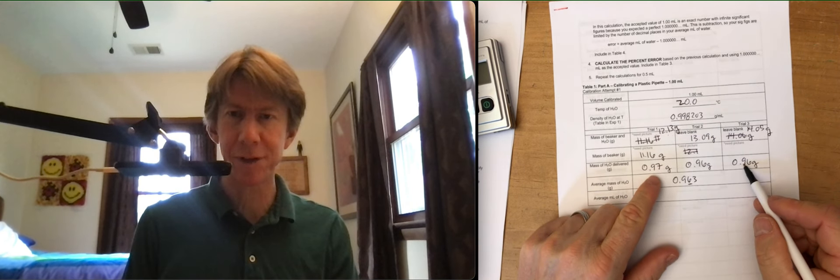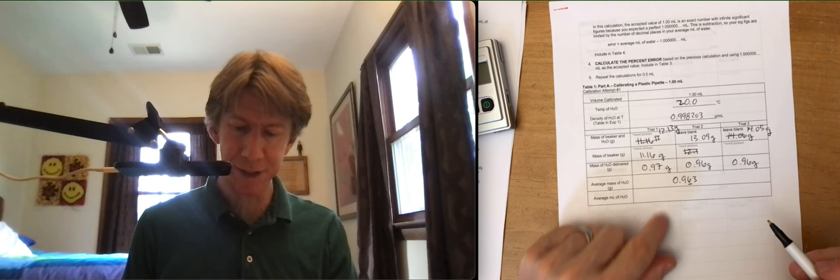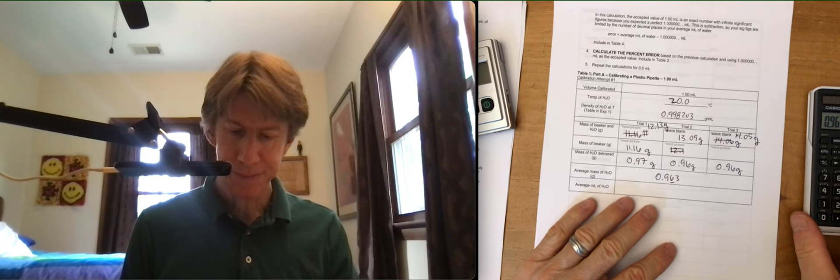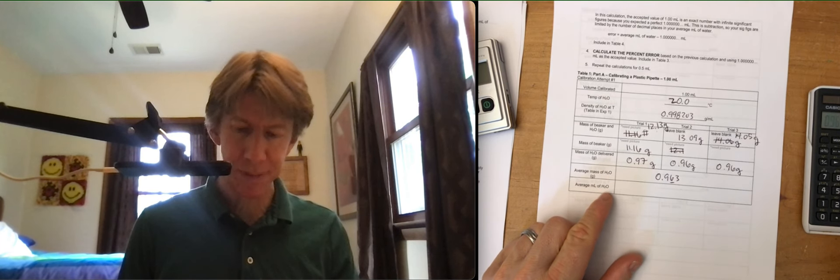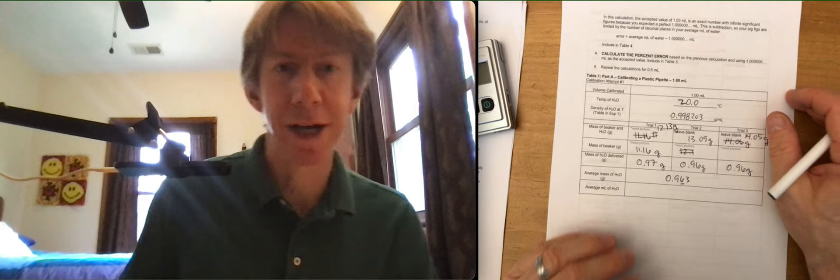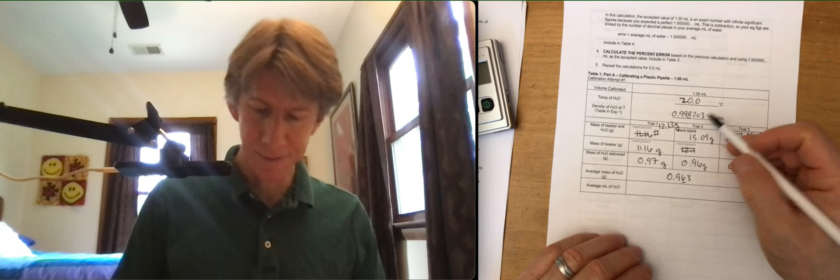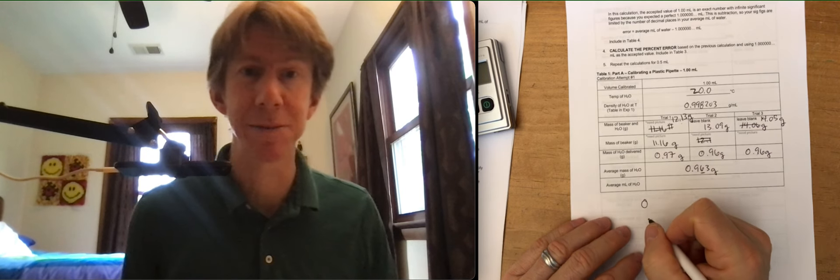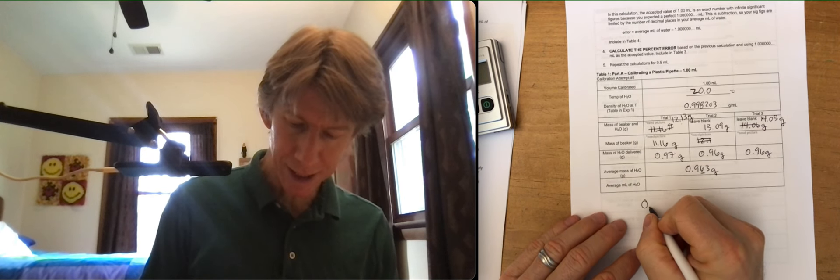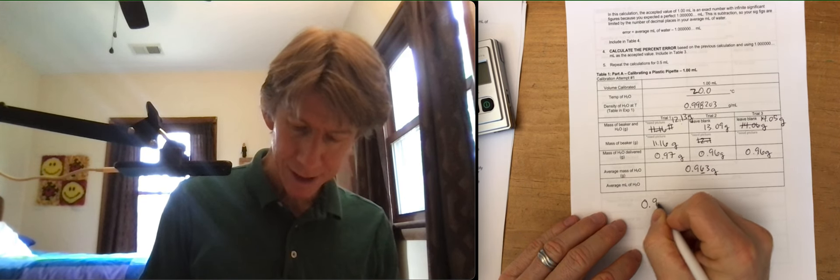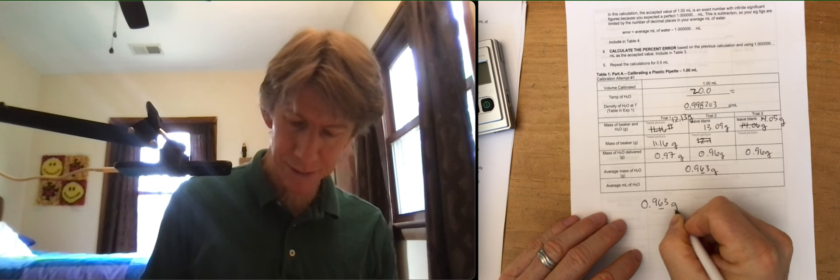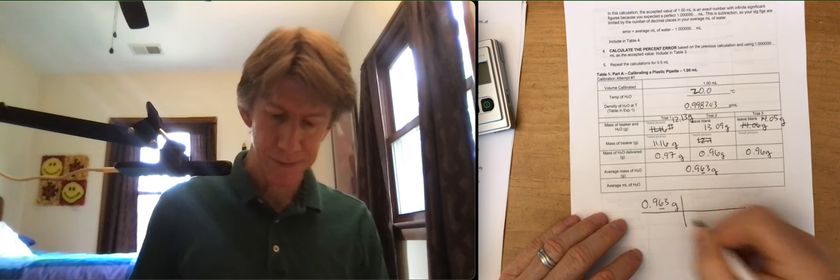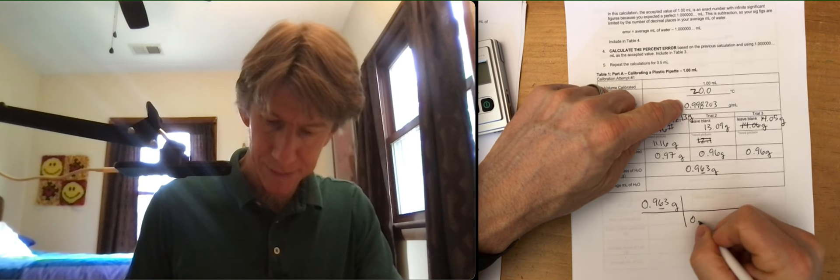Where I am, I have two sig figs in these numbers, so I'm only going to have two sig figs there. Average milliliters. Okay, so you have your grams. You have your density. Oh, those are grams, so I better put my units. I heart units. 0.963 grams.